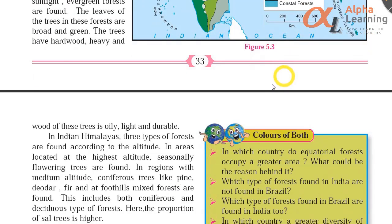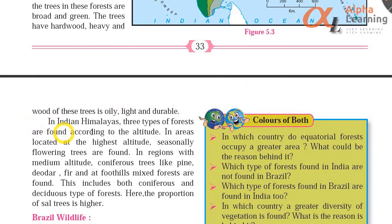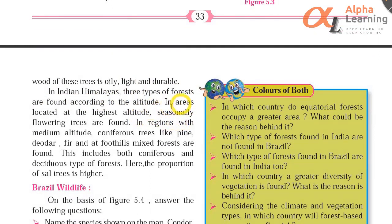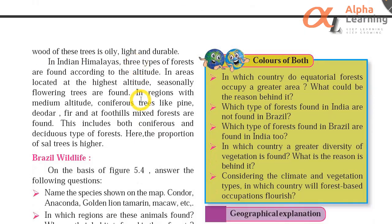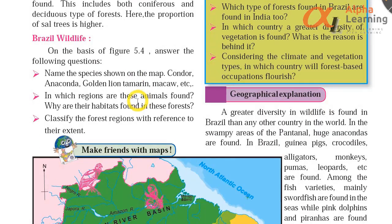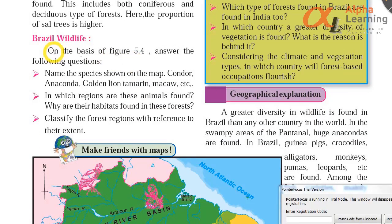They are called mangroves or Sundarbans in India — found extensively in West Bengal and Bangladesh. The wood of these trees is oily, light and durable. In the Indian Himalayas, three types of forests are found according to altitude: at the highest altitude, seasonally flowering trees; at medium altitude, coniferous trees like pine, deodar, fir; and at foothills, mixed forests including both coniferous and deciduous types. The proportion of sal trees is higher here — the explanation for this was given in the previous video.